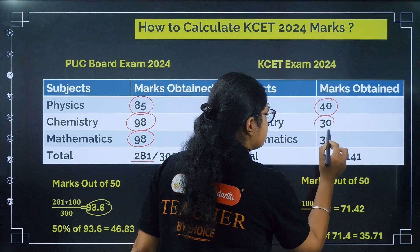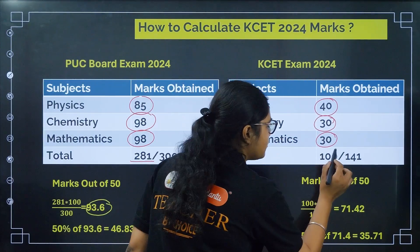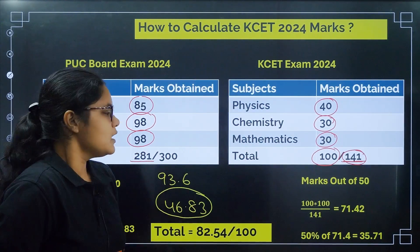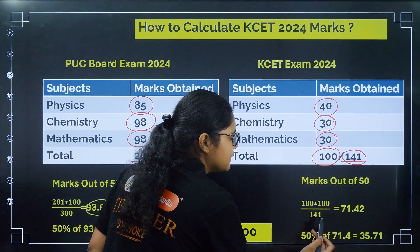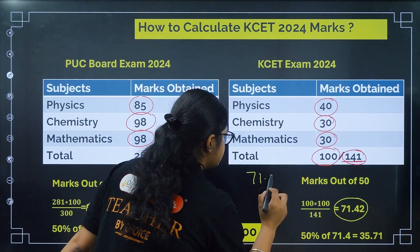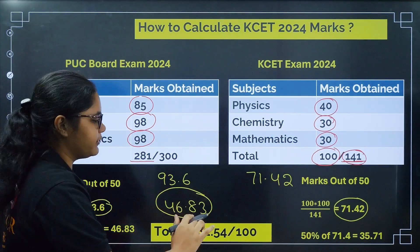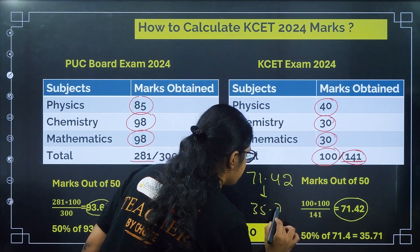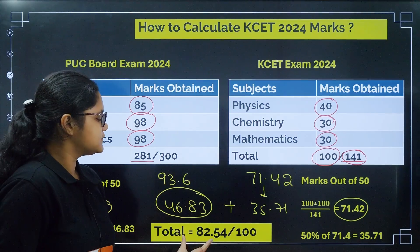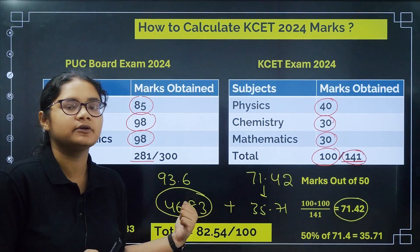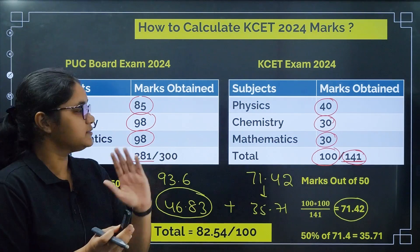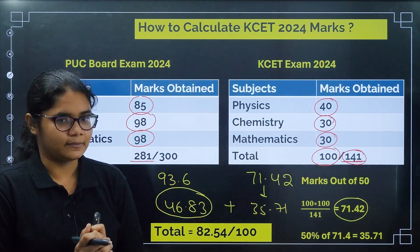Now from the KCET exam: suppose you got 14 in Physics, 30 in Chemistry, and 30 in Mathematics, giving a total of 74 out of 141 — note that the total is 141, not 180. Calculating the percentage: 100 ÷ 141 × 100 = 71.42%. Taking half of it gives 35.71. Adding both weightages: 46.83 + 35.71 = 82.54. This is your final KCET score, and your rank will be predicted based on this combined mark.